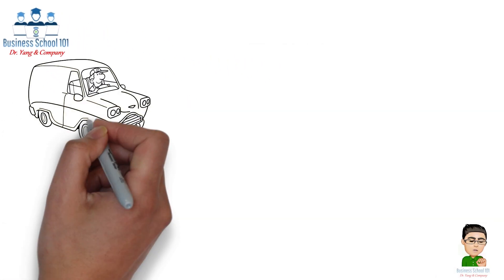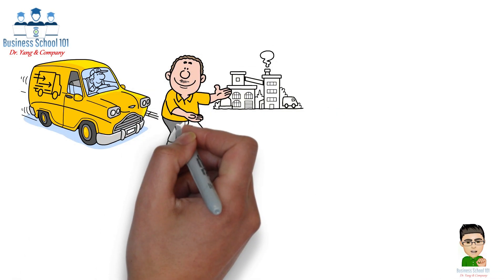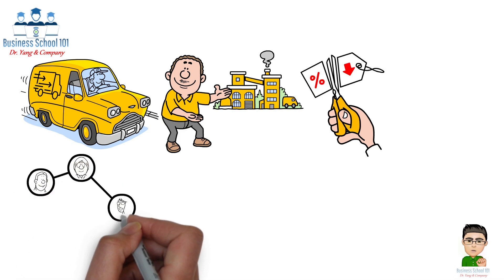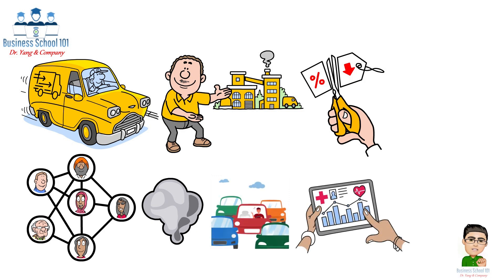Imagine you're deciding whether to drive to work or take public transportation. Or maybe you're a factory owner looking for ways to cut production costs. What you might not realize is that your decisions can have broader impacts on the people around you, affecting air quality, traffic congestion, or even the well-being of others.